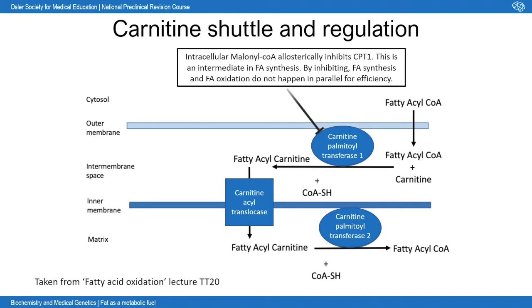There is a clinical relevance to carnitine: systemic carnitine deficiency, where deficiency of carnitine means fatty acids cannot enter the mitochondria for metabolism. This presents as dilated cardiomyopathy, because the heart is very dependent on fatty acid oxidation — deriving almost 50–70% of its ATP from it. The inability to metabolize fatty acids is a major metabolic burden on the heart, leading to cardiomyopathy.